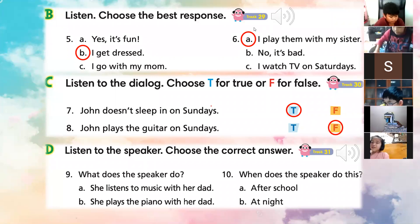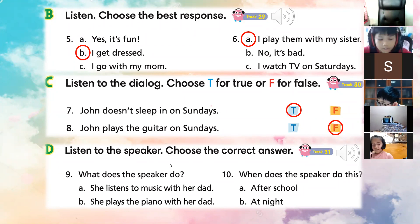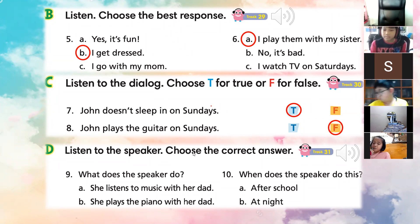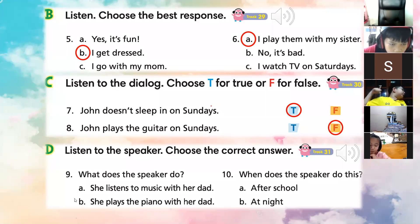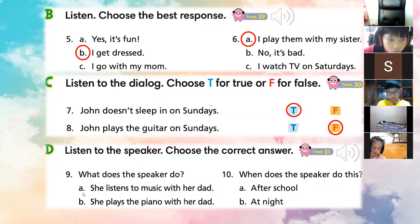All right students, we move to section D. Here we are also going to play the track. Listen carefully. Listen to the speaker and choose the correct answer. Before we play the track, read the questions. Number nine: What does the speaker do? A — she listens to music with her dad. B — he plays the piano with her dad. Question number ten: When does the speaker do this? A — after school. B — at night.